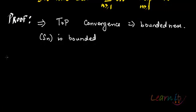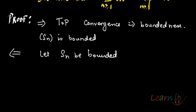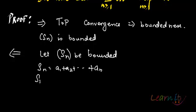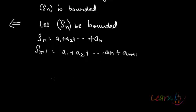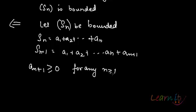Let's try to prove from the other way. Let SN be bounded. Now we have to prove convergence. SN is essentially A1 plus A2 plus so on till AN, and SN+1 will be A1 plus A2 plus so on till AN plus AN+1. We know that these terms are greater than or equal to zero, so AN+1 will also be greater than or equal to zero for any N greater than or equal to 1.